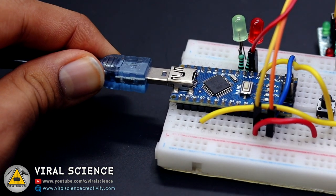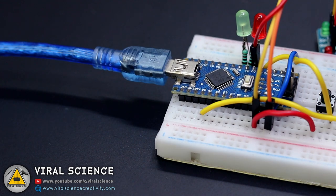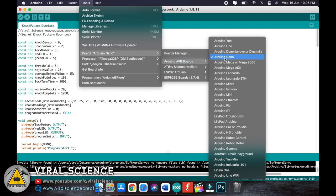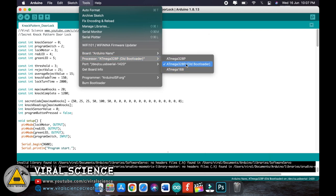After completing all the connections, connect your Arduino board with your computer and open my code. You don't need to make any changes in the code. Just select the Arduino board, select the port and upload the code.